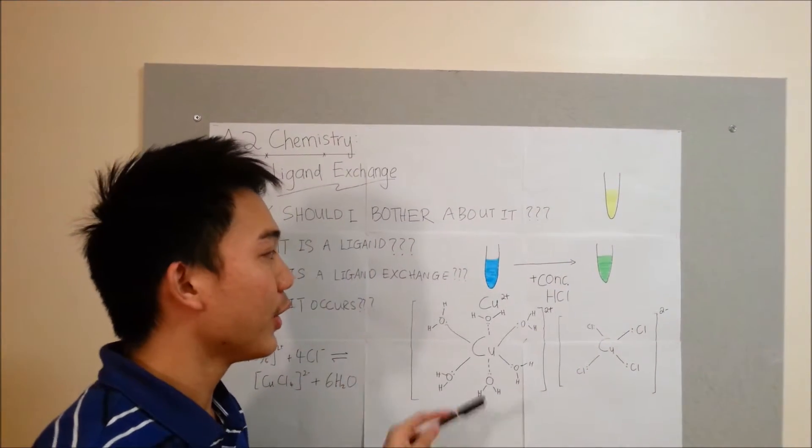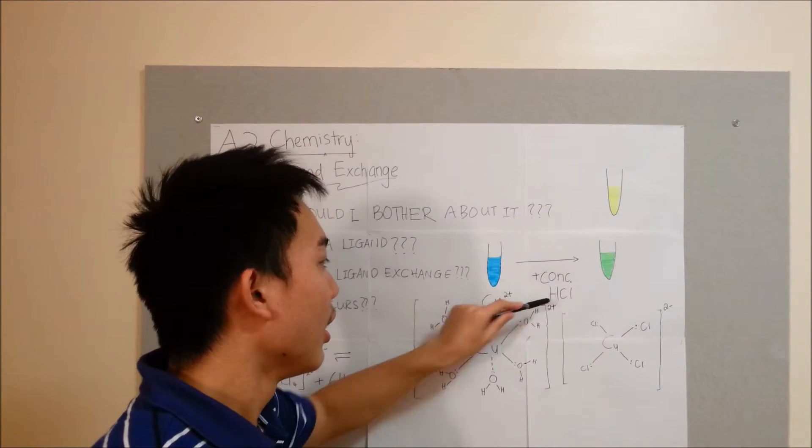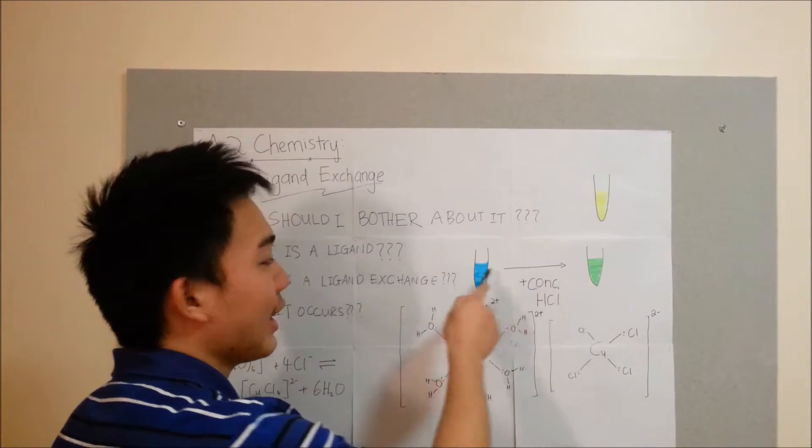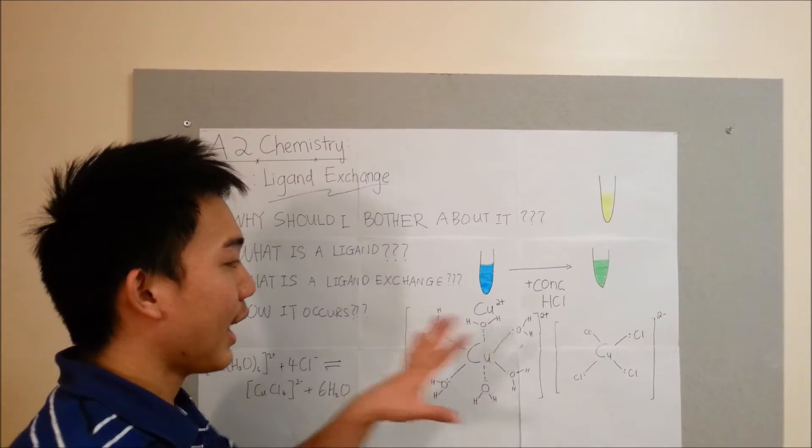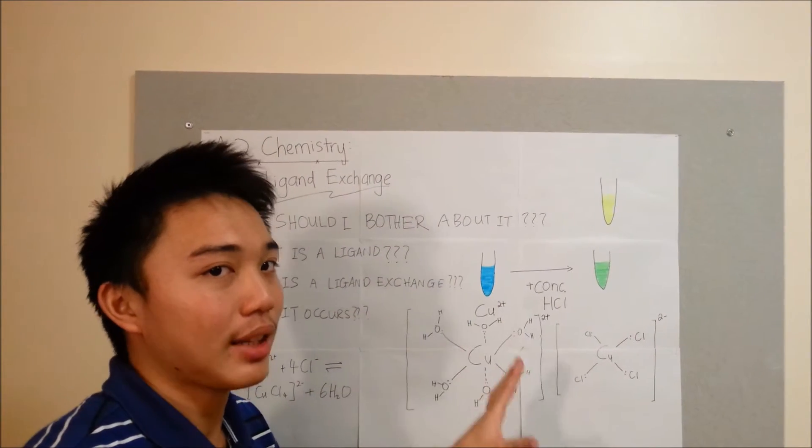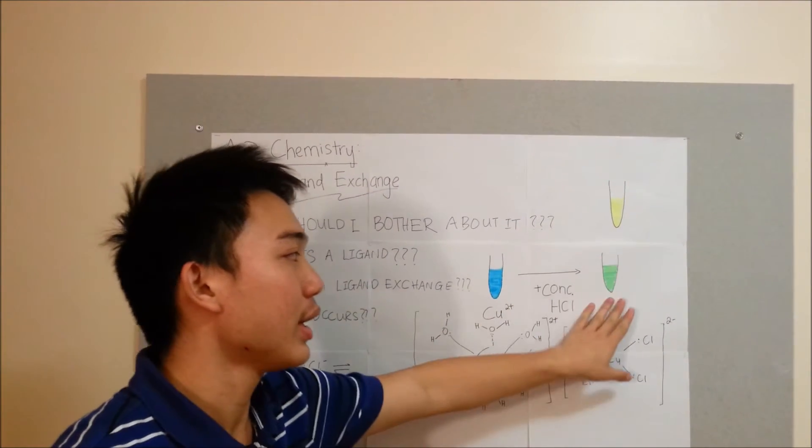But why? So first of all, we add in concentrated HCl. HCl contains chloride ions. The chloride ions actually replace the water ligands. The Cl- acts as a ligand here. And it replaced the water. It actually changed to green.